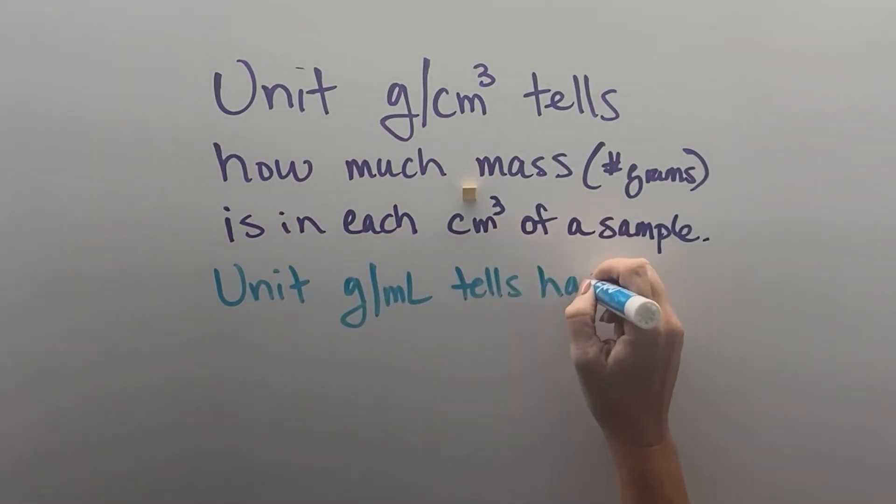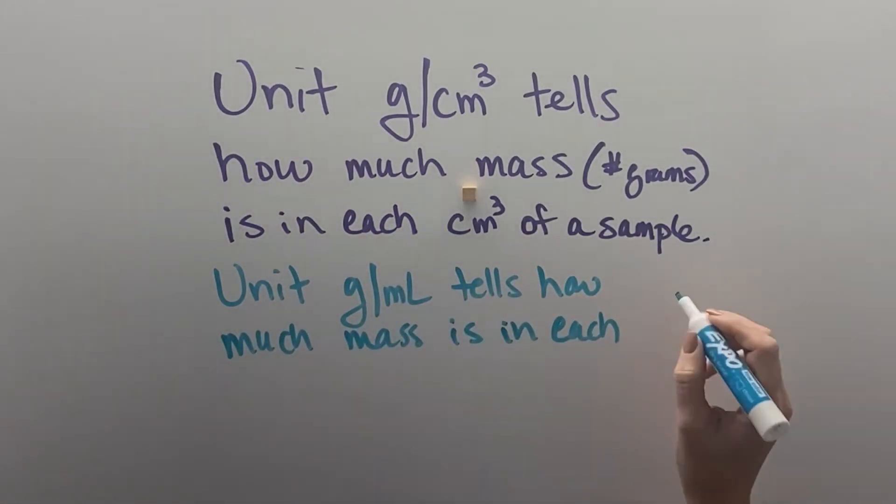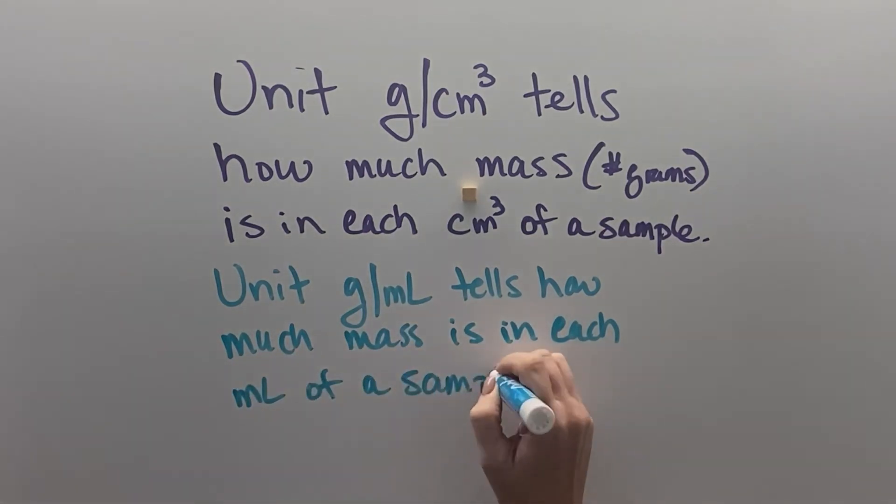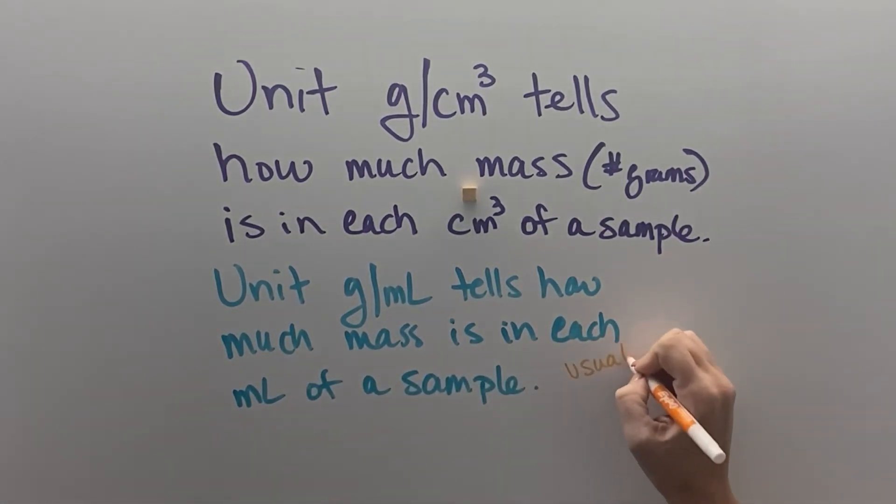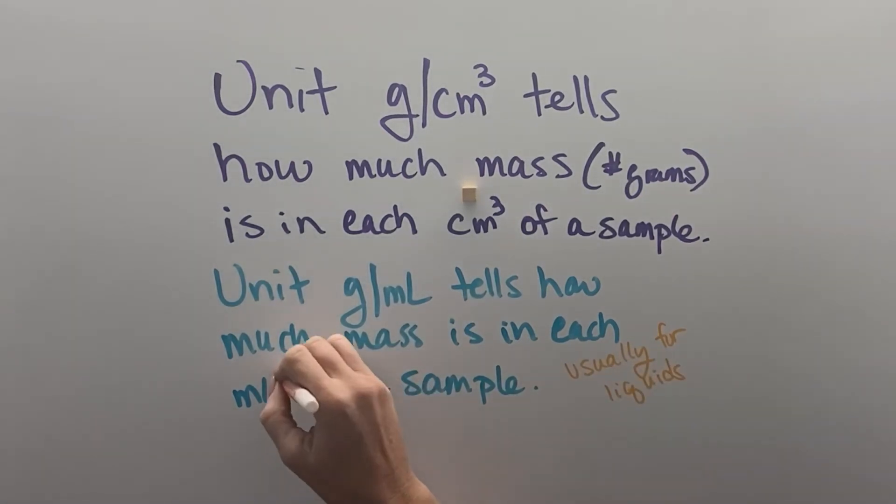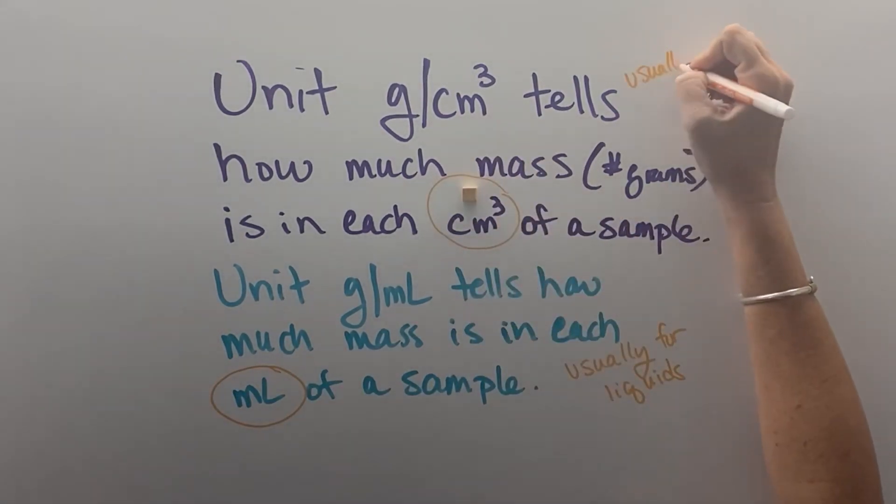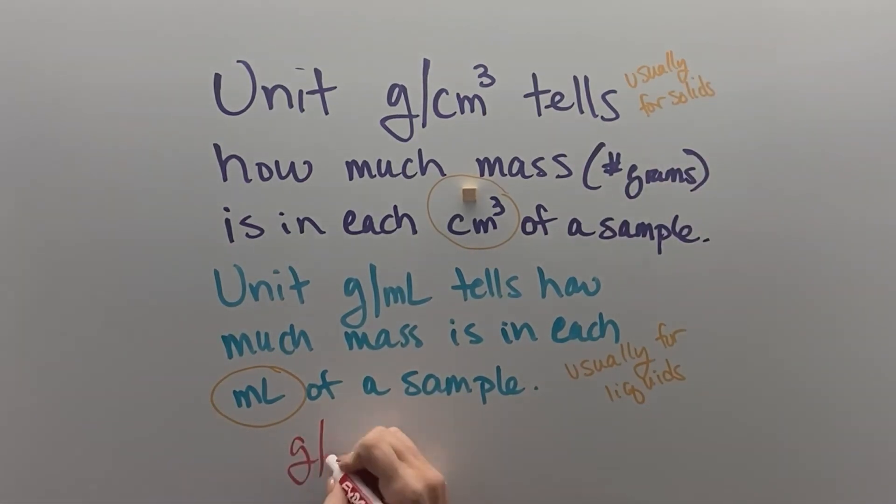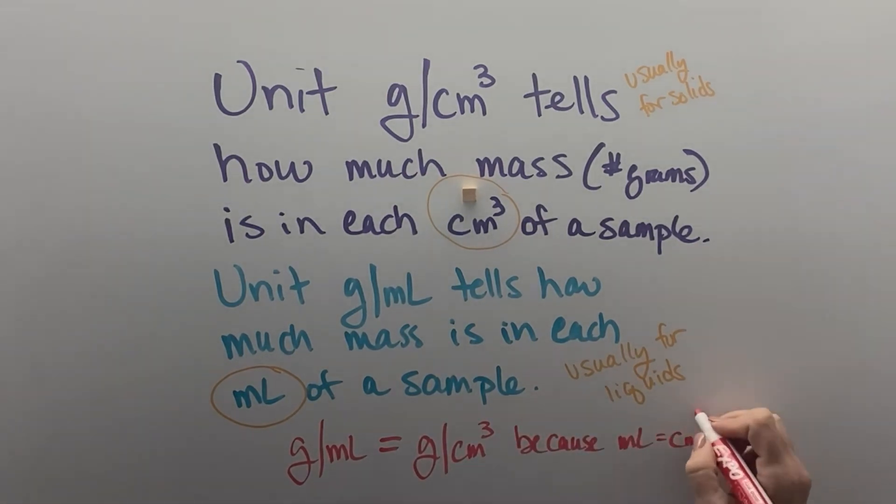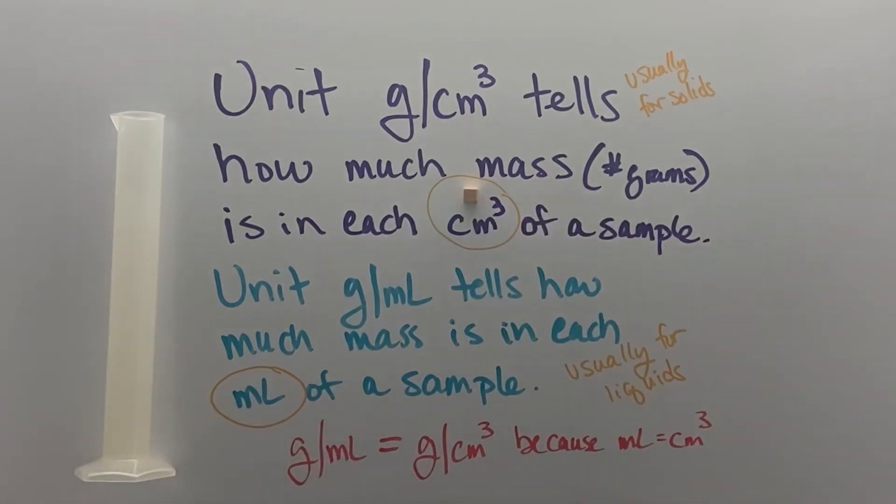The unit grams per milliliter tells us how much mass is in each milliliter of a sample. Again, the more milliliters we have, usually the more grams. Now, because milliliters is a measurement for liquids, and cubic centimeters is usually a measurement of solids, that's usually what we see the gram per centimeter cubed and the gram per milliliter used for. But they're equivalent to each other, because milliliters and cubic centimeters are the same amount of volume. We just see one used for solids typically, and one used for liquids typically. But they're interchangeable measurements.